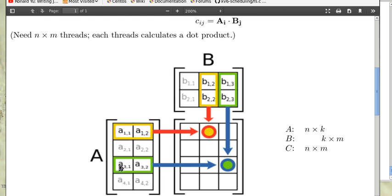This is the third row and third column element of C. So in general if A is n by k and B is k by m, then C will be n by m.